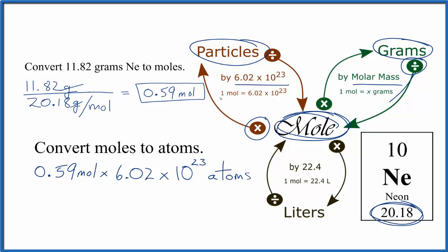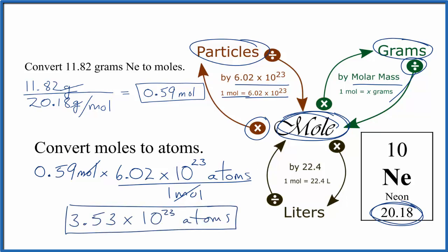And remember, 1 mole is 6.02 times 10 to the 23rd particle, so let's put this over 1 mole. When we multiply the moles, they'll cancel out. That'll leave us with atoms, and our answer will be 3.53 times 10 to the 23rd neon atoms.